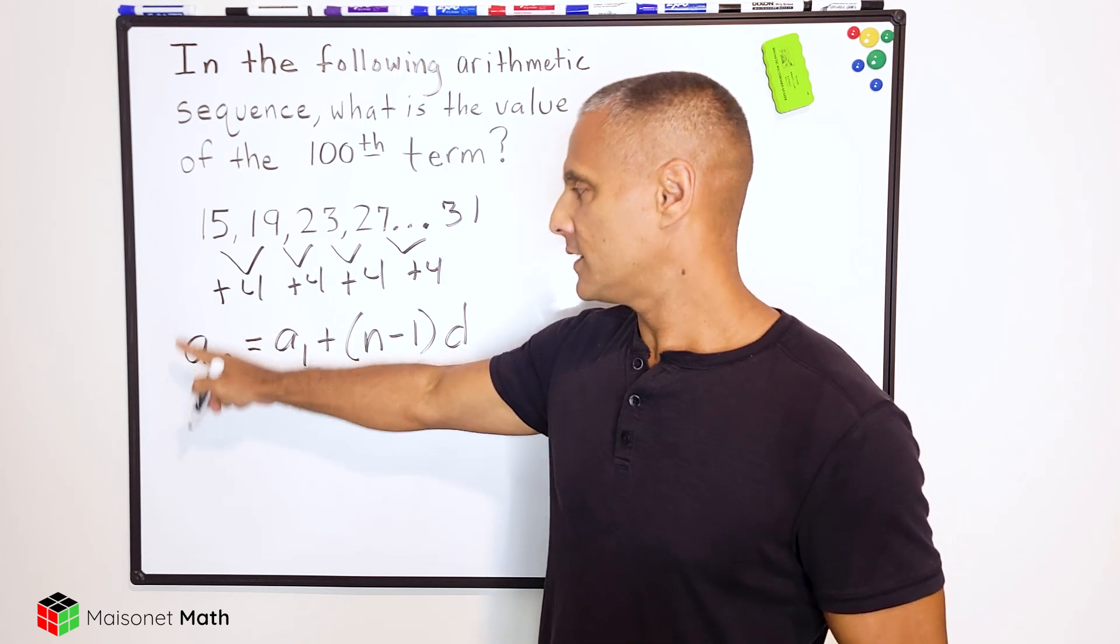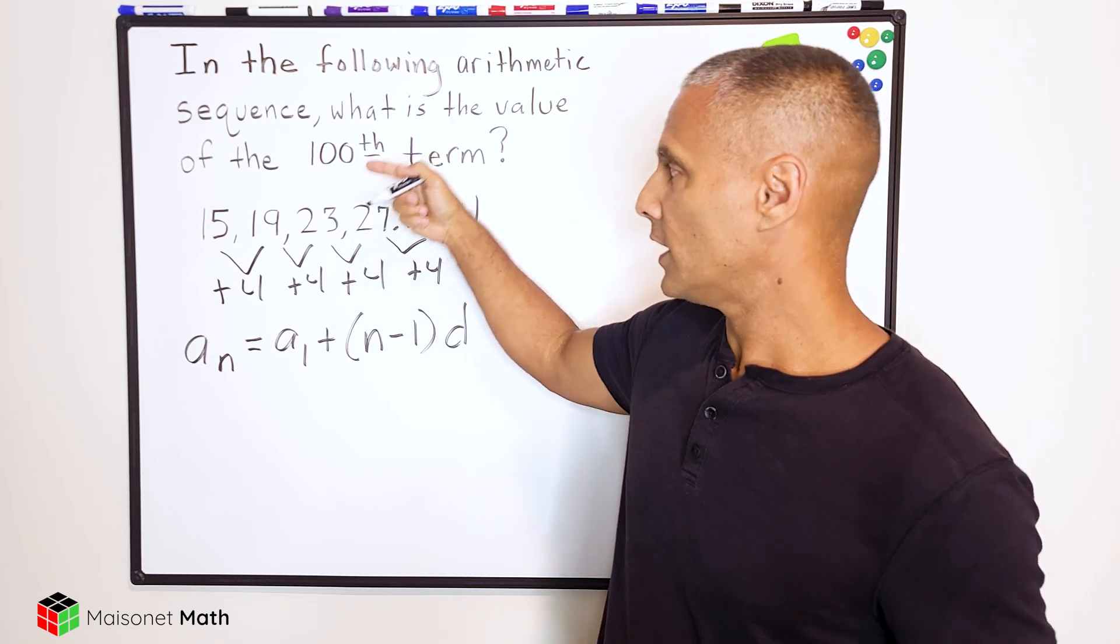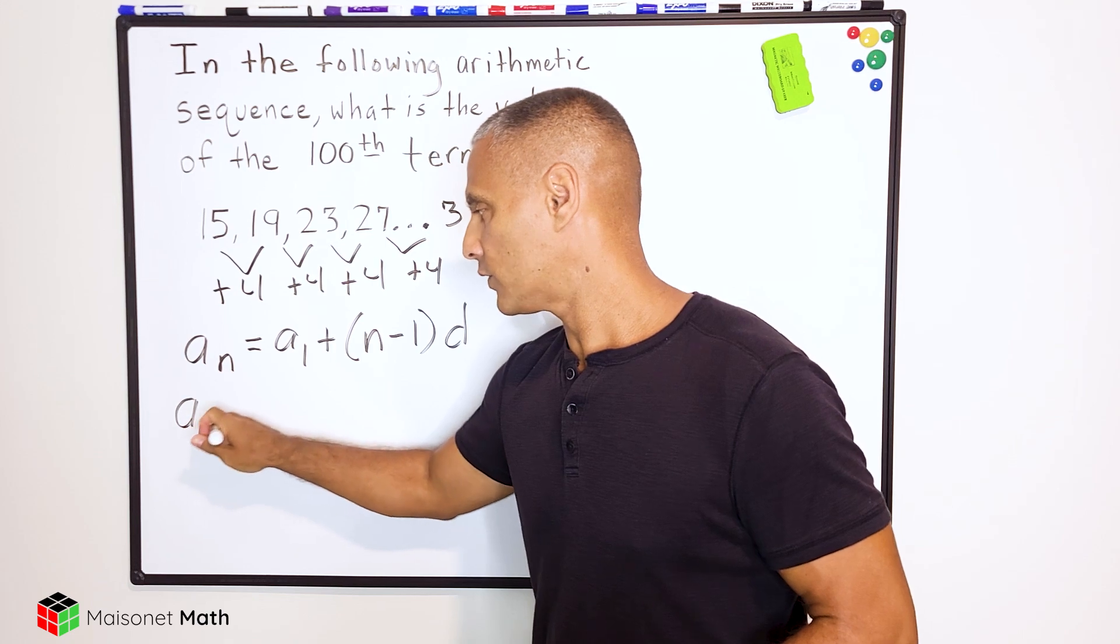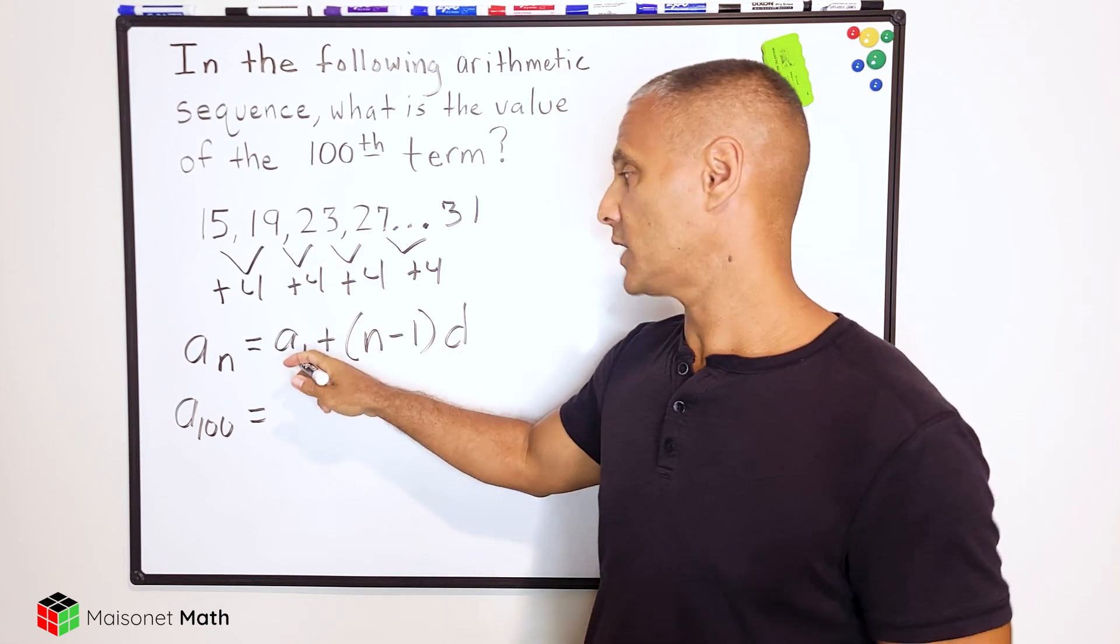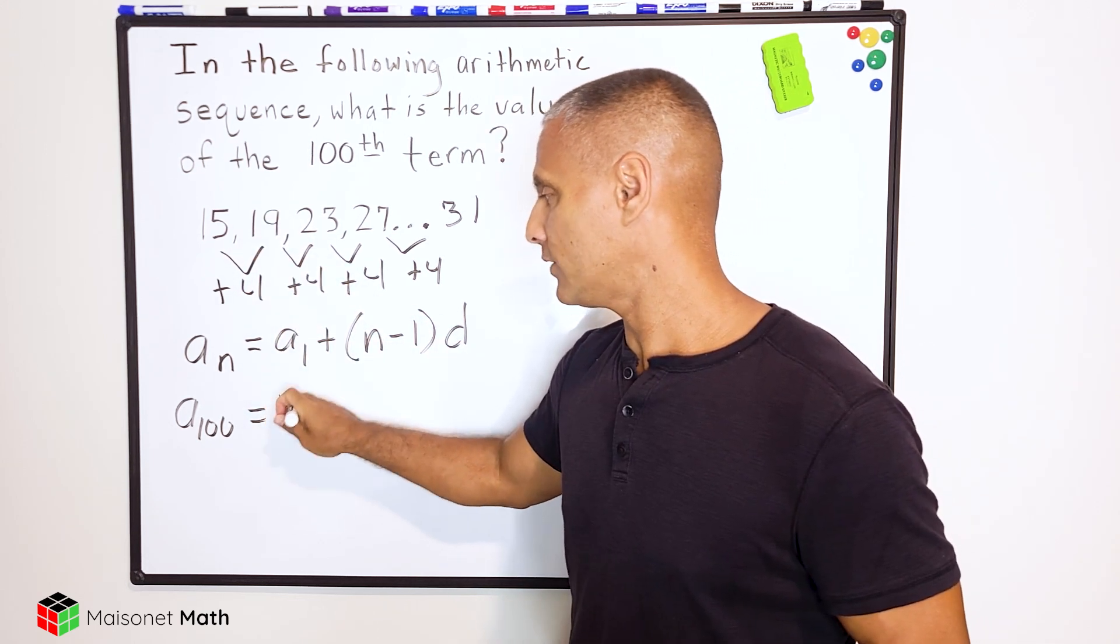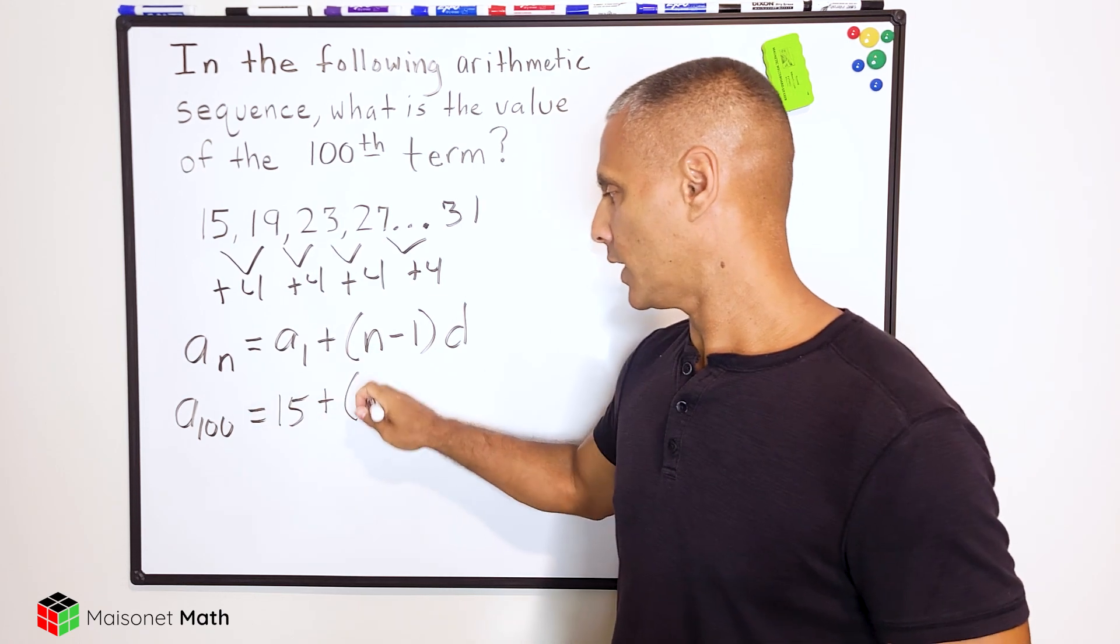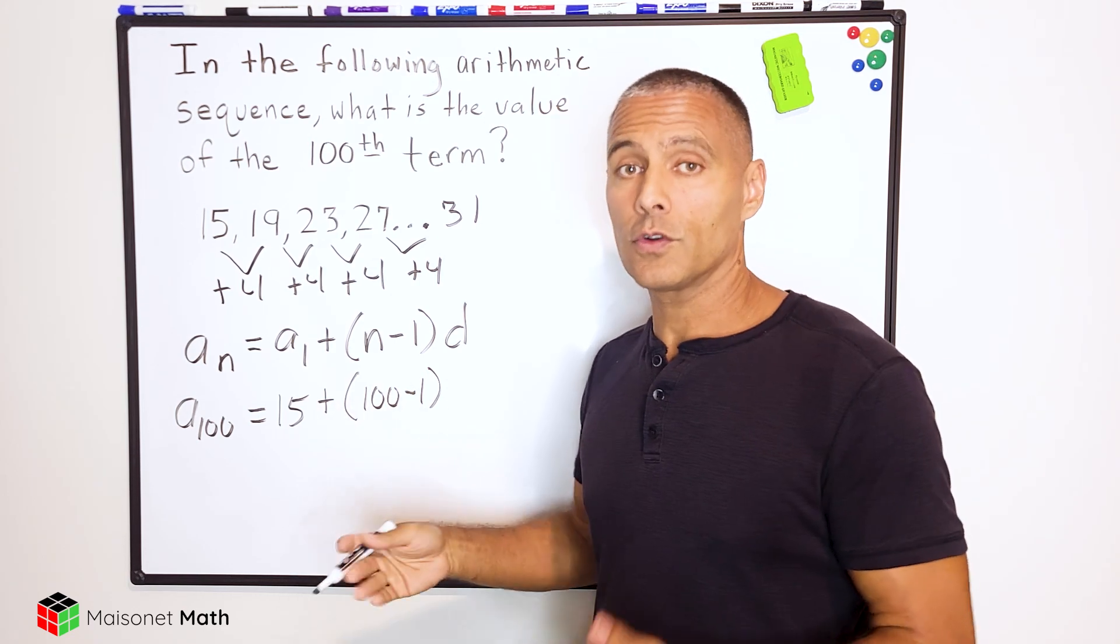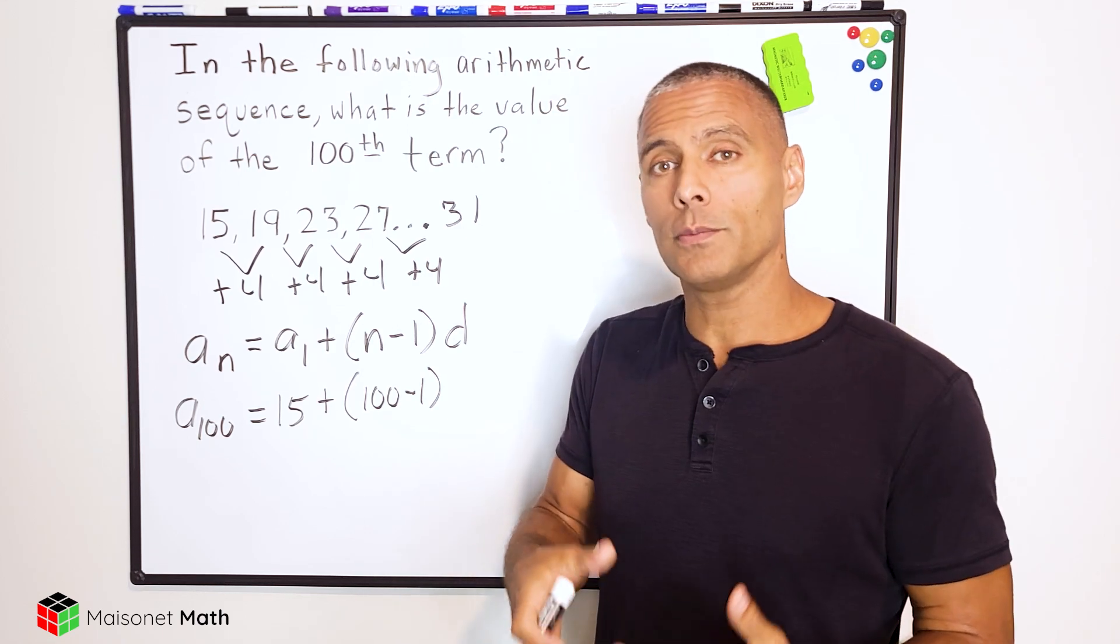So a sub n just means what is the term in question. So we want to find the hundredth term in our sequence, so we could say that is a sub 100. So n equals 100. And a with the 1 for the sub notation just means what is the first term in our sequence, and our first term is 15. That is our starting point. Now n we already determined is equal to 100, and we subtract 1. That gives us 99, which makes sense because you're always going to have one less common difference altogether than the number of terms in your sequence.